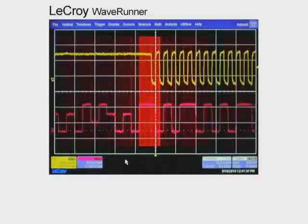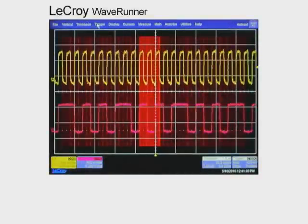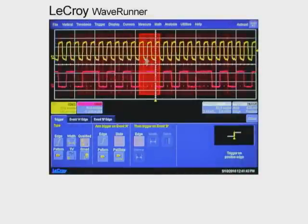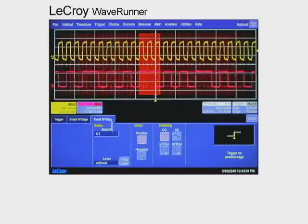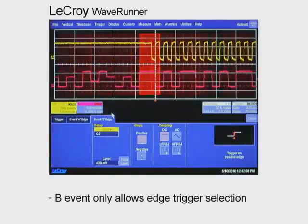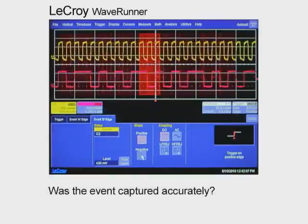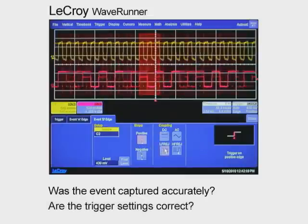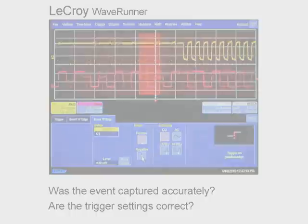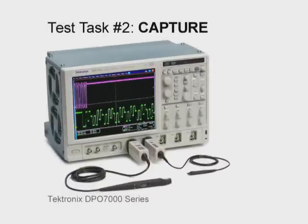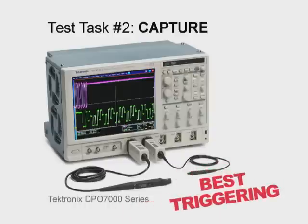Now let's try the LaCroix WaveRunner. Here we've captured the clock signal with a standard edge trigger, but we're having a difficult time looking for a transition timeout trigger for the B event in its trigger system. It looks like we can do a qualified AB trigger, but the B event is only allowing us to select an edge trigger. How do we know this captures the event accurately? The LaCroix trigger system leaves many questions unanswered. After performing test task number two, it's easy to conclude that the Tektronix DPO7000 has the best trigger system for capturing complex signal anomalies.